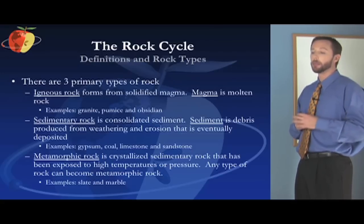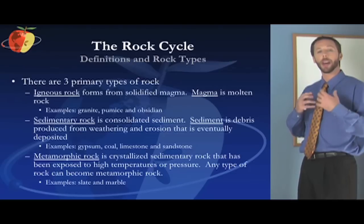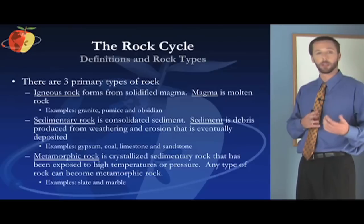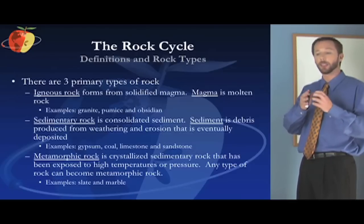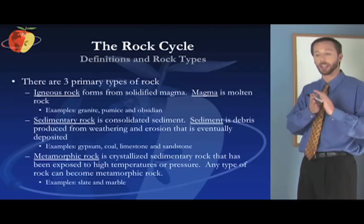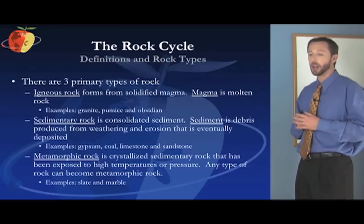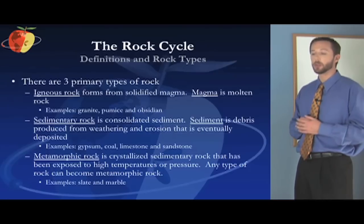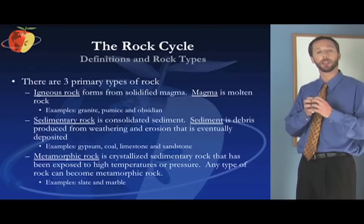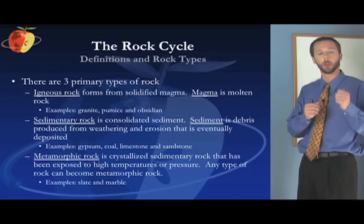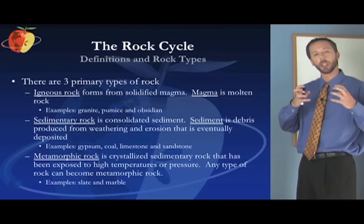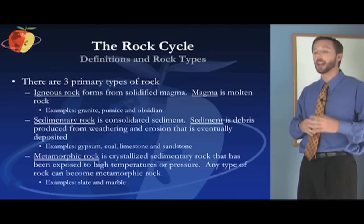The next type is sedimentary rock. It is consolidated sediment. Basically, weathering breaks down rocks into little pieces and those pieces get transported by the wind, by rivers, and eventually they get deposited. When they get deposited they get packed together, and those little pieces form a new kind of rock — sedimentary rock. Examples include gypsum, coal, limestone, and sandstone. With sandstone it's very clear that it's little particulate pieces of rock packed together, because you can crush it very easily — hit it with a hammer and it breaks apart.